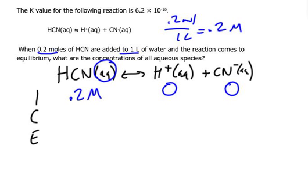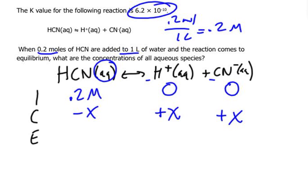We're trying to figure out the concentrations of all the species here, and we're also told the value of K. We don't know how much H+ is going to go up — we know it's going to go up by X, an unknown. Since the ratio is 1 to 1, CN- also goes up by X, and HCN drops by X. So our equilibrium concentrations are X, X, and 0.2 minus X.